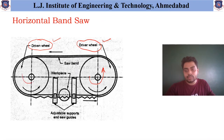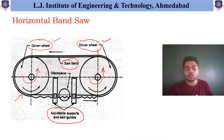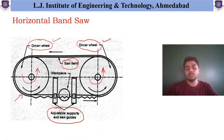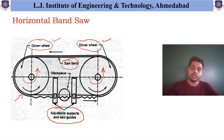When this driver wheel rotates, this driven wheel also rotates. On the periphery of which the cutting band — that is the saw band — is connected, which helps to remove the material. Adjustable supports and saw guides are provided, which are helpful to adjust the workpiece as per the shape and size of different workpieces. The operation is the same as that of the vertical band saw. When this band saw rotates and the workpiece is set as per requirement, it starts removing material from the workpiece and cuts off the parts required.